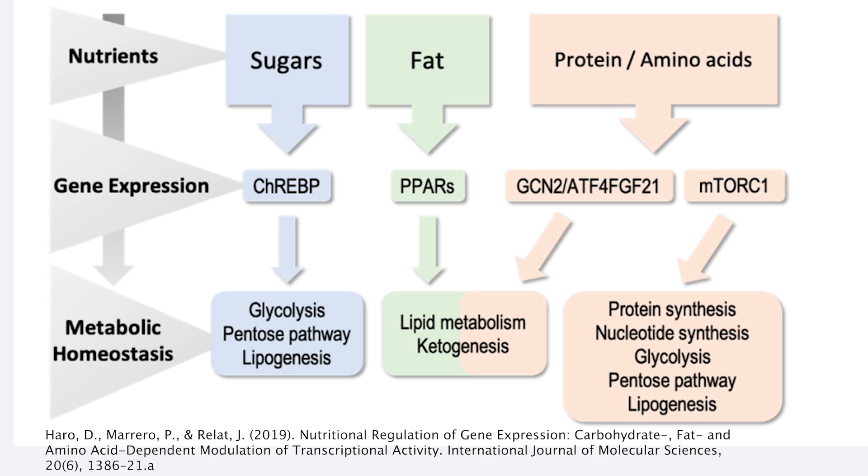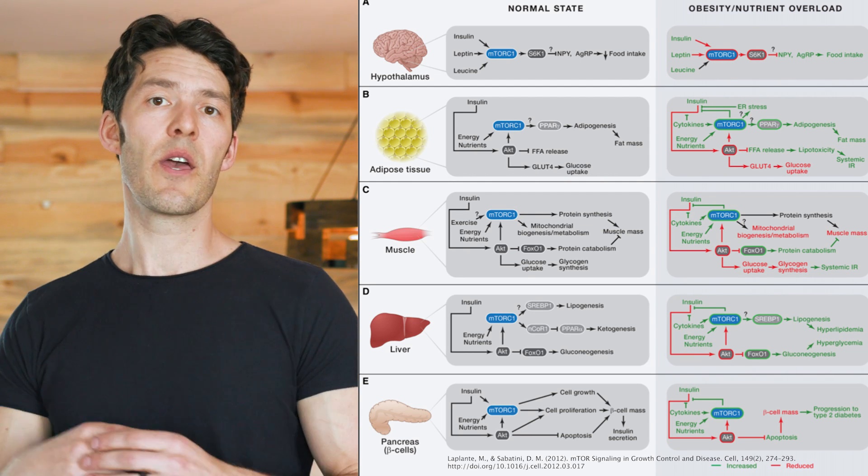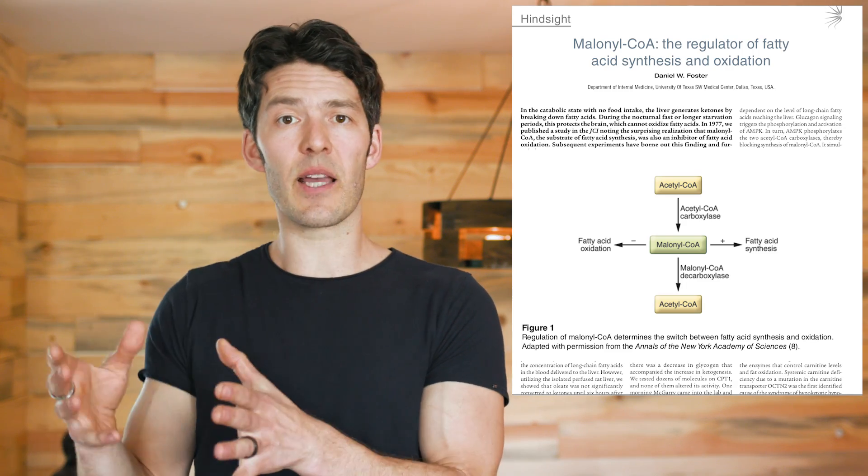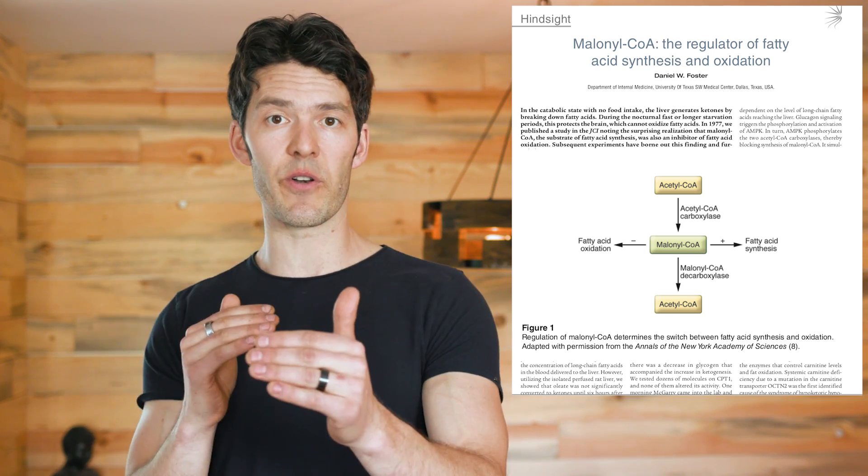The other camp — that I fall into, along with Thomas DeLauer and others — is the hormone camp. We know that energy balance matters absolutely, but it matters in the context of intracellular signaling pathways like mTOR and AMPK. There's also an intracellular enzyme called malonyl-CoA, a key regulator of fatty acid synthesis versus utilization within the mitochondria, particularly in the liver. Insulin and glucagon both influence malonyl-CoA, which in turn influences the balance of fatty acid synthesis and oxidation. So we can't ignore hormones — that's the big take-home.